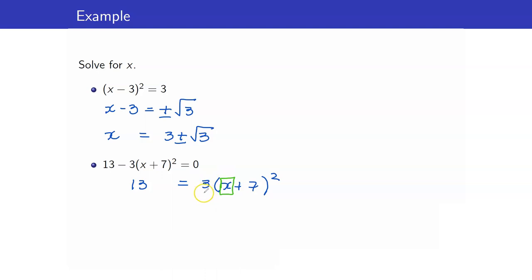So that means that we have to get rid of 3 first. Divide both sides by 3. We get x plus 7 squared is equal to 13 over 3.